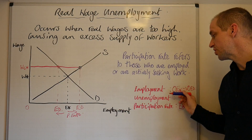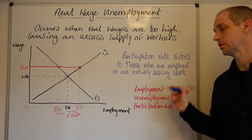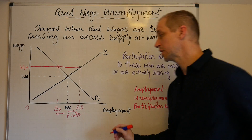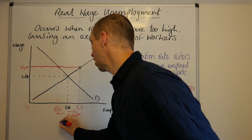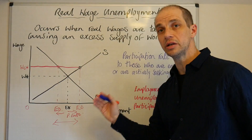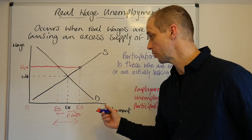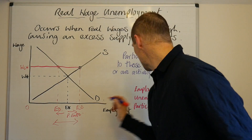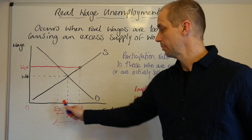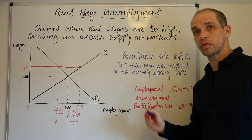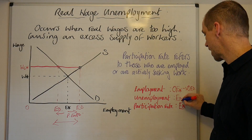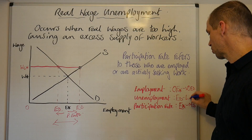When we look at the impact on unemployment as a whole: previously the market cleared and there was no unemployment, but now unemployment runs from ED right through to ES, as we can see on the diagram.